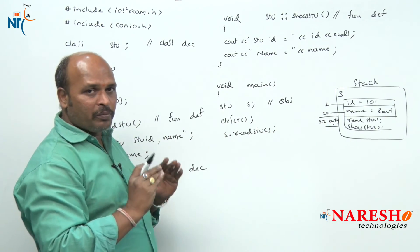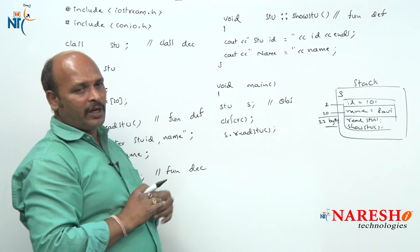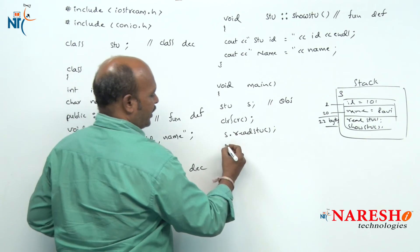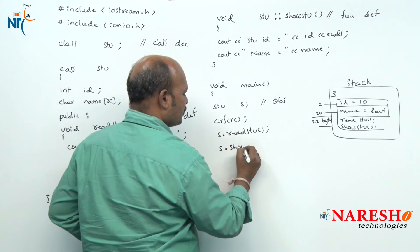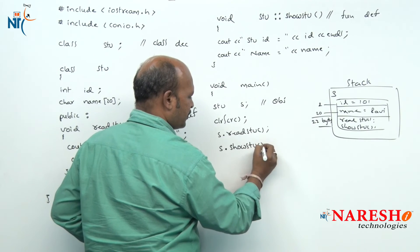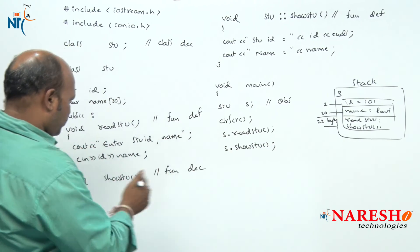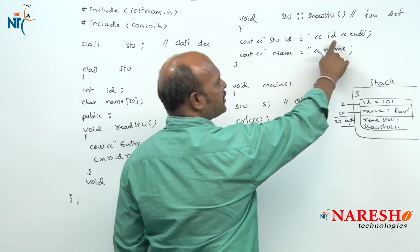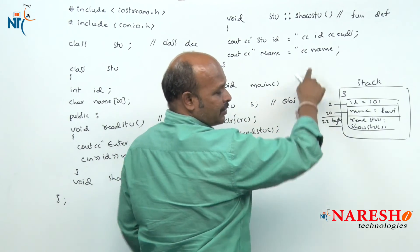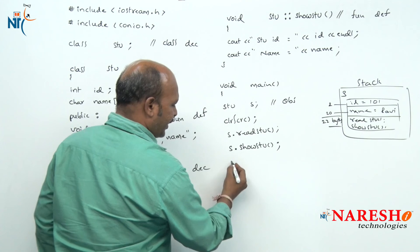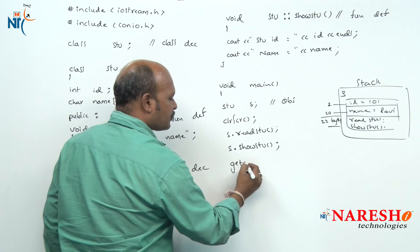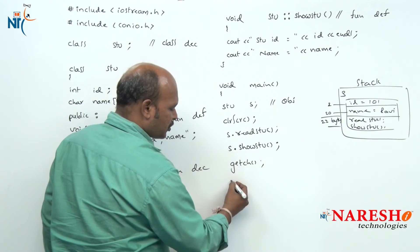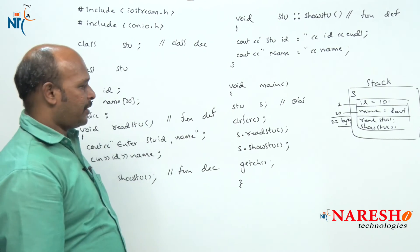Now we have to print this data, so s.show_student is called. s.show_student prints the student id first, then the name. Output process is now also completed, and s.show_student is done. At last, getch stops the screen so we can see the output, and the program is completed.